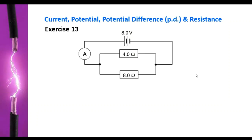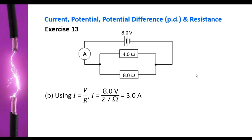In exercise 13 part B, you need to determine the reading on the ammeter. The reading on the ammeter is the current coming from the battery. The current from the battery is the potential difference across both resistors divided by the effective resistance of the two resistors. Using I equals V over R, I equals 8.0 volts divided by 2.7 ohm, giving an answer of 3.0 ampere — the current supplied by the battery.